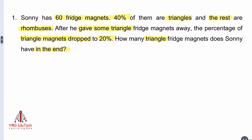First, we need to identify that this question is a before-and-after type of question. How do we know that? Because of the word 'gave,' which shows that a change has taken place. So we're going to label: before, change, after. This problem involves triangle and rhombus fridge magnets, so we're going to label T, R, and total.